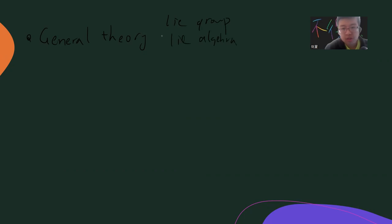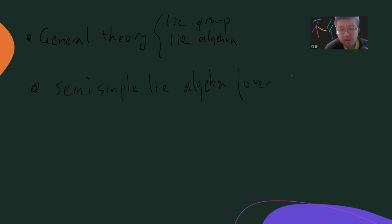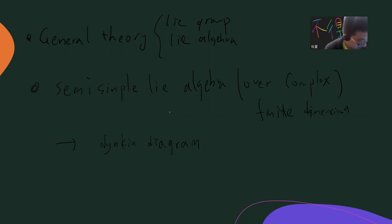The second part: usually Lie algebras are very exotic in general, so one can talk about semi-simple Lie algebras. Basically, over the complex numbers with finite-dimensional condition, you can prove this gives you the Dynkin diagram — the so-called Dynkin diagram — and also a root system.